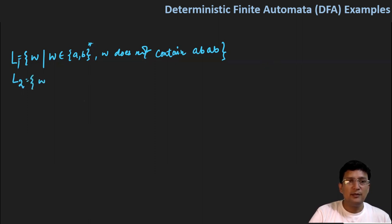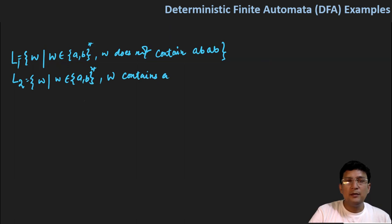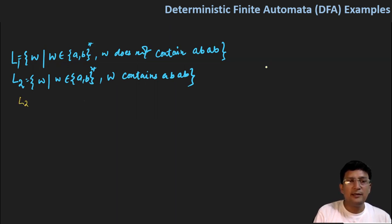So the complement of this language will be the set of strings w that contains 'ab*', meaning it contains only a and b symbols — and w contains 'abab'. So if w contains 'abab', the smallest string will be 'abab'.